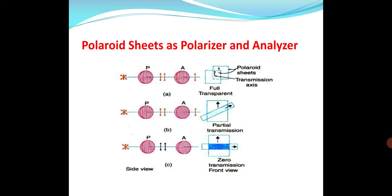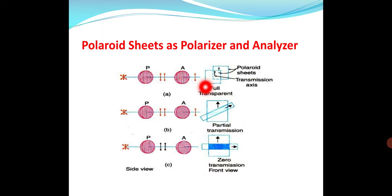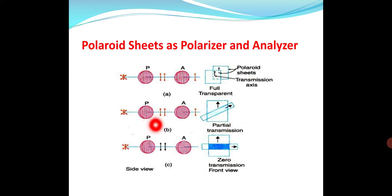When unpolarized light falls on polarizer P, at the output we get polarized light. If we allow it on an analyzer and the optical axis of the analyzer is parallel to the polarizer, then at the output we get plane polarized light — the transmission axes are the same, giving full transparency. If we rotate the analyzer, the intensity at the output decreases according to the angle of rotation. If the analyzer is at 90 degrees, we get zero output.